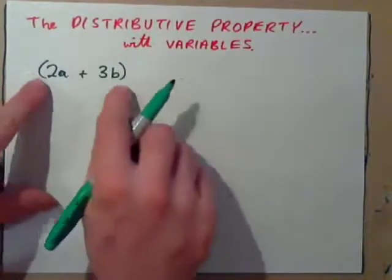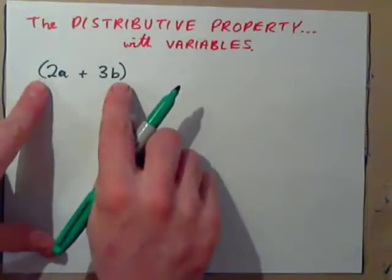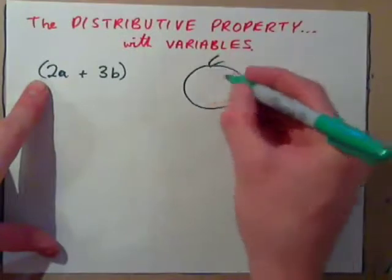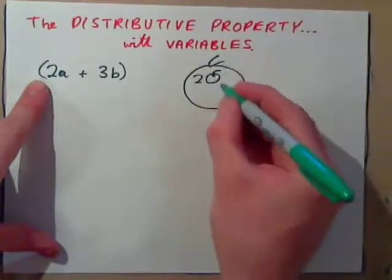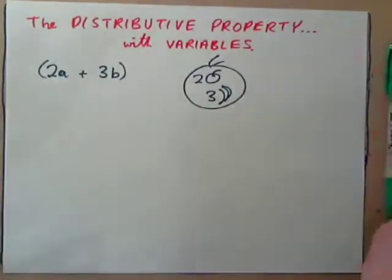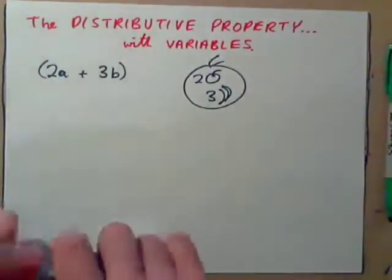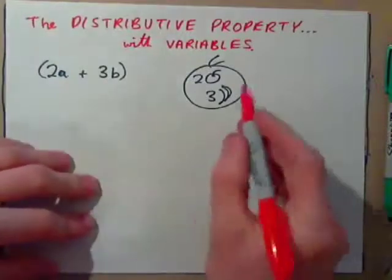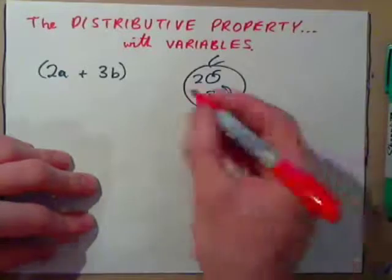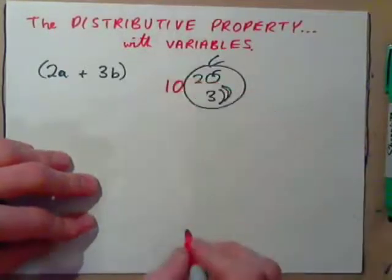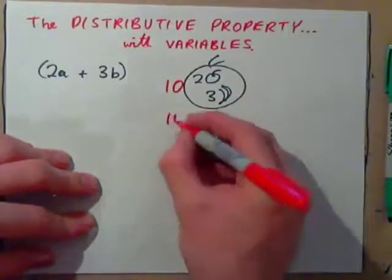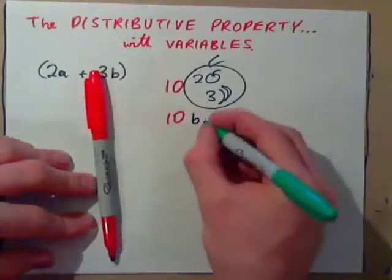If you put parentheses around this quantity, that's like enclosing it in a bag — like having a bag with 2 apples and 3 bananas in it. Logically, if you see this picture of a bag with 2 apples and 3 bananas, what would it mean if somebody put the number 10 in front of it?